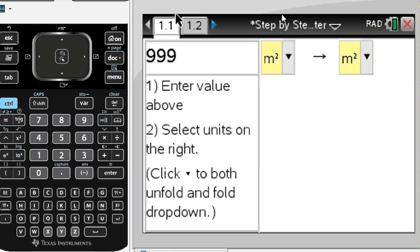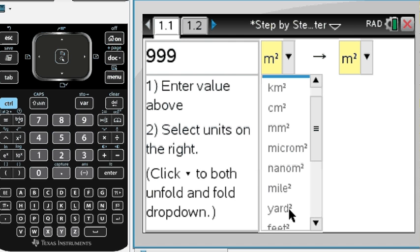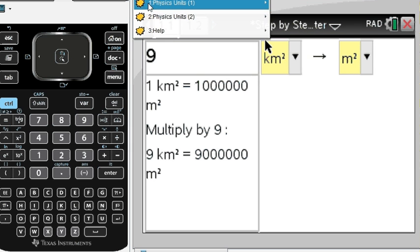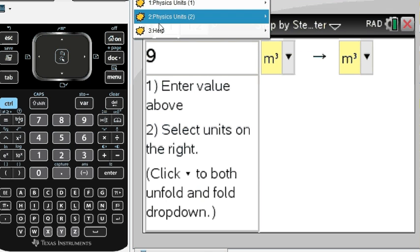The same with the area, as you can see here: square meters, kilometers squared, etc., yard squares, feet squares. Okay, just change the initial unit. One square kilometer is 1 million square meters, multiply by 9, so here we have it. So that is area.